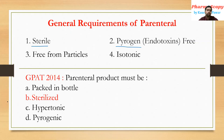Third, it should be free from particles. And fourth, it should be isotonic. So these are the four important parameters for any parenteral formulation: sterile, pyrogen-free, free from particles, and isotonic.